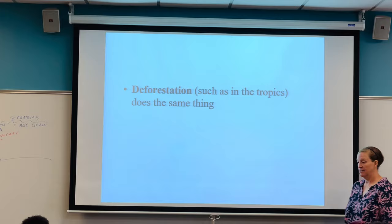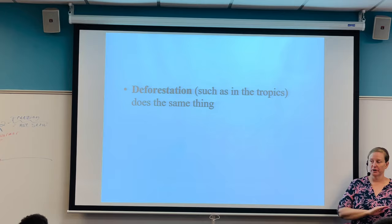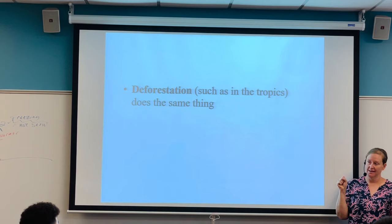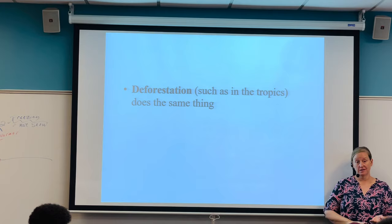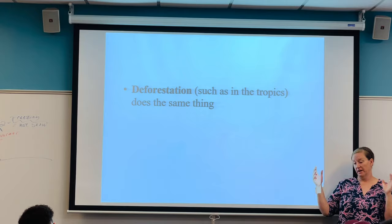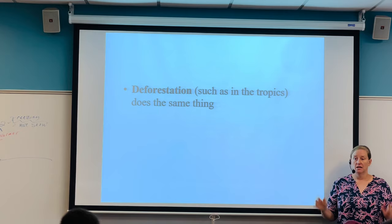Another problem with combating climate change is deforestation. In areas rich with producers, cutting them down removes the very things that can take carbon dioxide out of the atmosphere. Often with deforestation, they don't just cut trees down — they burn them to more quickly clear land for monocultures like pineapples or mangoes. Burning living things adds extra carbon dioxide to the atmosphere.